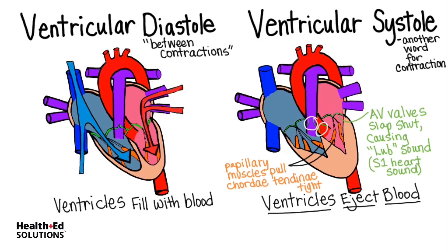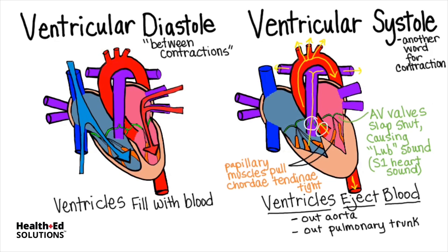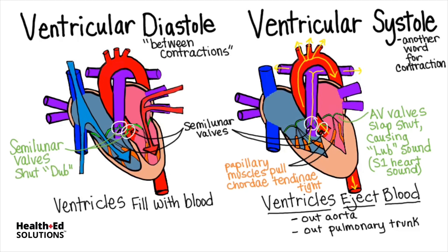The left ventricle ejects its blood out the aorta, whereas the right ventricle ejects its blood out the pulmonary trunk. These semilunar valves only remain open while pressure is at its highest in the ventricles. As soon as the ventricles begin to relax, the semilunar valves will fall shut, and they make this audible dub sound known as S2, or the second heart sound.